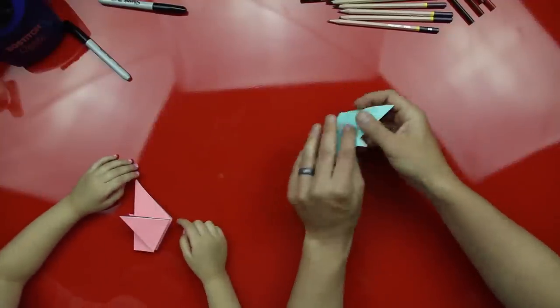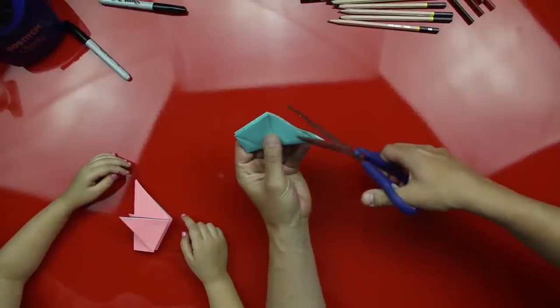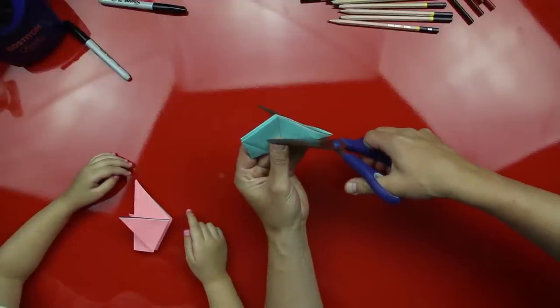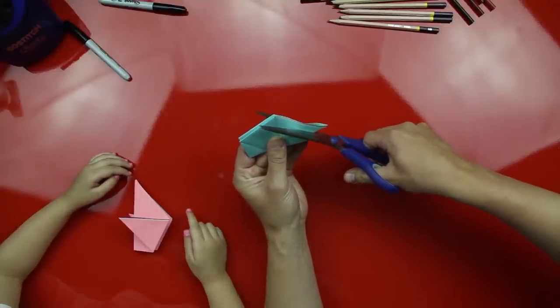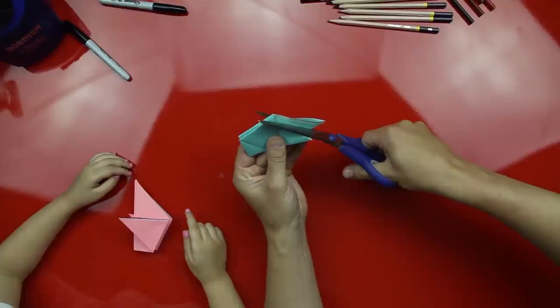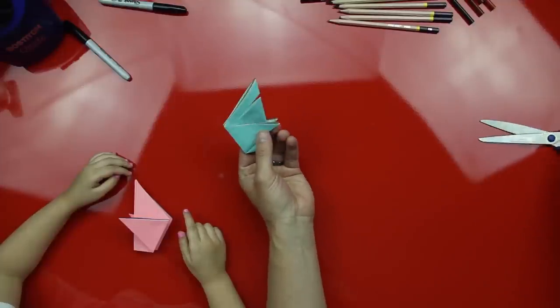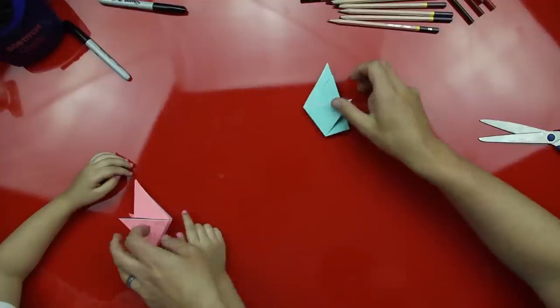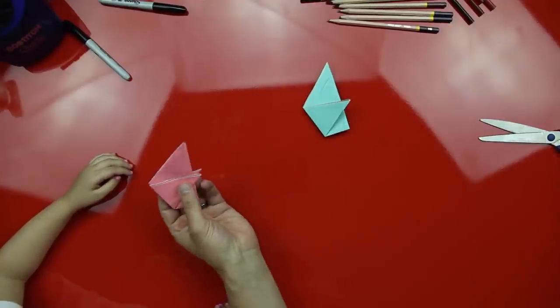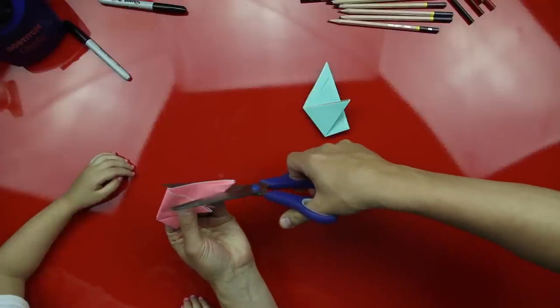Okay, now we're gonna use the scissors and I'll do this part for you. We're gonna cut the handle. So we're gonna cut almost all the way down to that line right there. And then we're gonna open it up. Is this starting to look like a purse?